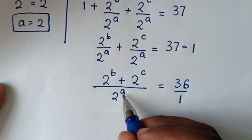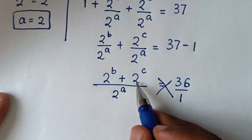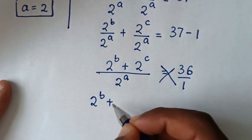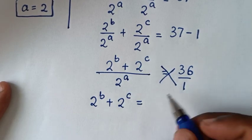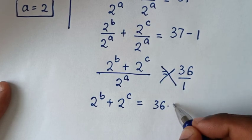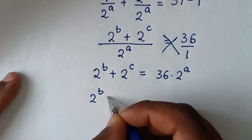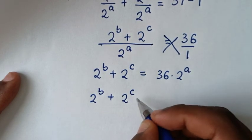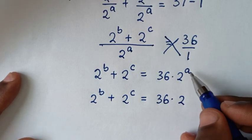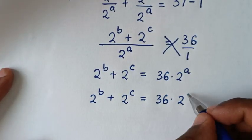So we can cross multiply. It will be 2 power b plus 2 power c times 1, so 2 power b plus 2 power c is equal to 36 times 2 power a. We already have the value of a, which is 2, so it will be 36 times 2 power 2.